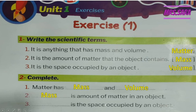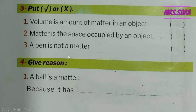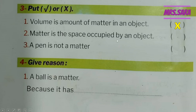Question number three: right or wrong. Number one — volume is the amount of matter in an object. The magic words 'amount of matter' refer to mass, not volume, so this is wrong. Number two — matter is the space occupied by an object. 'Space' refers to volume, not matter, so this is wrong. Number three — a pen is not matter. Everything and anything around us is matter, so this is wrong.